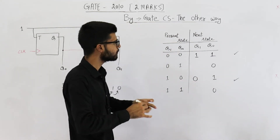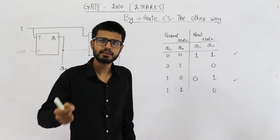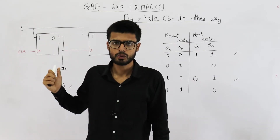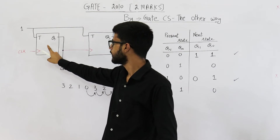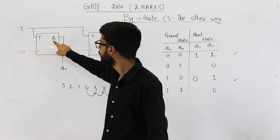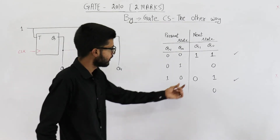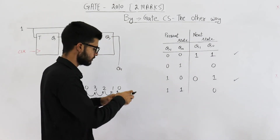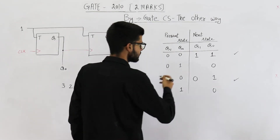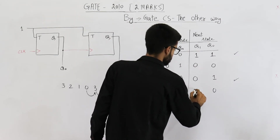In the case where Q0 changes from one to zero, it is a negative edge of clock for the second flip-flop. Whatever the external clock is, it is connected only to the first flip-flop. The second flip-flop's clock signal is generated by the first flip-flop. Since we consider the flip-flops to be positive edge triggered — which is the default — there will be no change: zero will be left as zero, and one will be left as one.